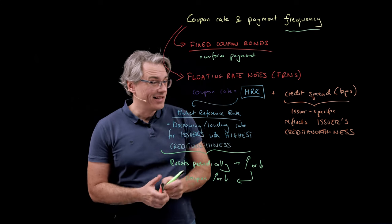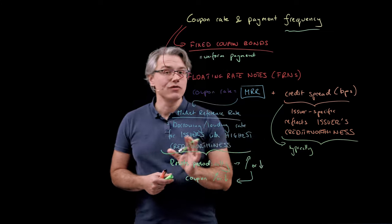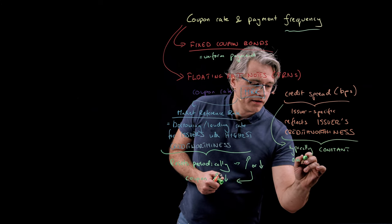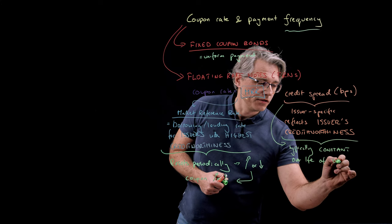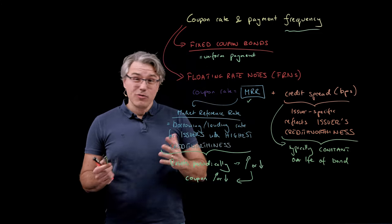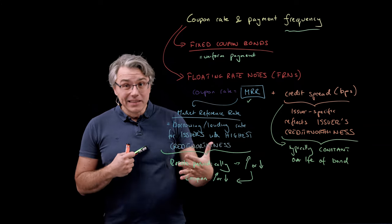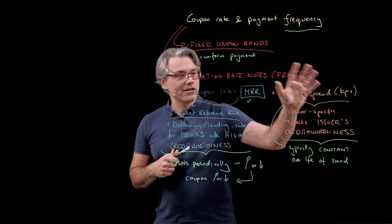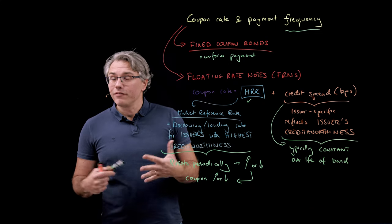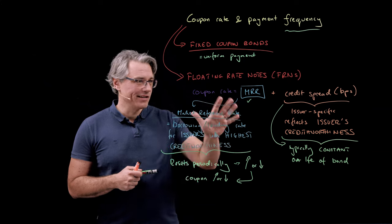Typically the credit spread stays constant over the life of the bond or note, so it doesn't adjust — the MRR is the adjusting or variable bit. Obviously, if the quality of the issuer subsequently changes once the bond has been issued, this may lead to certain price fluctuations, given the fact that the credit spread set at issuance may no longer adequately reflect the issuer's quality. But that's a topic for later modules.